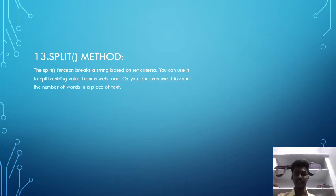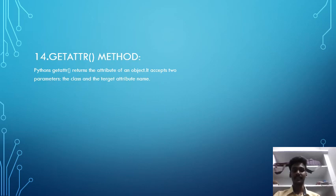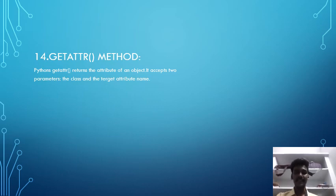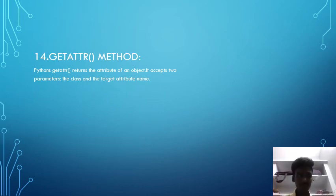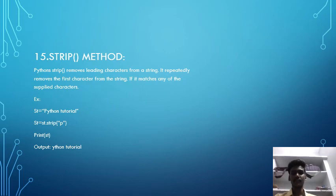The thirteenth one is split() method. The split() function breaks a string based on set criteria. You can use it to split a string value from a web form, or you can even use it to count the number of words in a piece of text. The fourteenth one is getattr() method. Python's getattr() returns the attribute of an object; it accepts two parameters: the class and the target attribute's name. The last method is strip(). Python's strip() removes leading and trailing characters from a string. It repeatedly removes the first character from the string if it matches any of the specified characters. An example is given below.